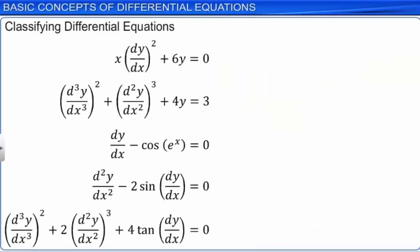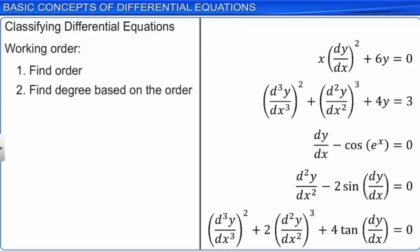There exist many types of differential equations; however, we can classify them based on their characteristics. While classifying a differential equation, we first find its order and then its degree. To find the degree, verify whether the differential equation is a polynomial differential equation. The first three differential equations are polynomial differential equations. In the fourth and fifth equations, there is a trigonometric function of the derivative, so these are not polynomial differential equations and their degree cannot be found.